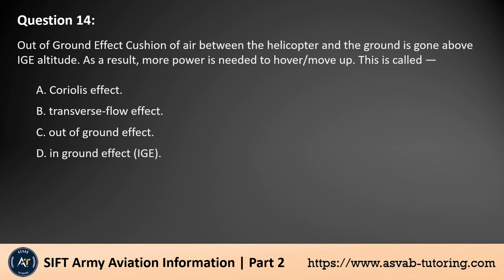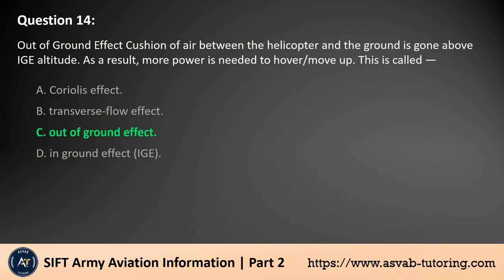Question 14. Out-of-ground effect: the cushion of air between the helicopter and the ground is gone above IGE altitude. As a result, more power is needed to hover or move up. This is called: A. Coriolis effect. B. Transverse flow effect. C. Out-of-ground effect. D. In-ground effect (IGE). The answer is C. The condition where the cushion of air between the helicopter and the ground is lost above IGE altitude, requiring more power to hover or move up, is called out-of-ground effect. In this state, the helicopter no longer benefits from the increased lift and reduced induced drag provided by the ground's influence, leading to a greater power requirement for sustained flight.